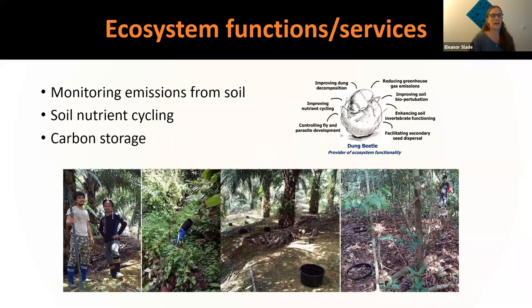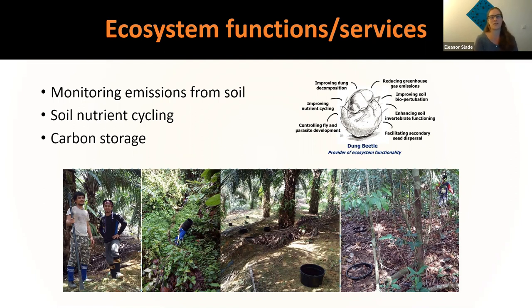As well as structure and biodiversity, we also measured ecosystem functions. Colleagues at the Centre for Ecology and Hydrology in Edinburgh monitored emissions from the soil — things like carbon dioxide, nitrous oxide and methane emissions. We looked at soil nutrient cycling by measuring turnover of dung from dung beetles back into the soil, and we measured carbon stocks and carbon storage.